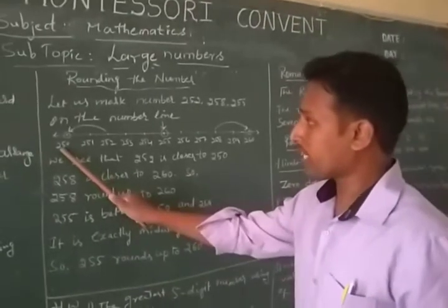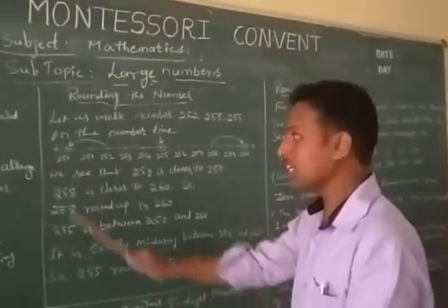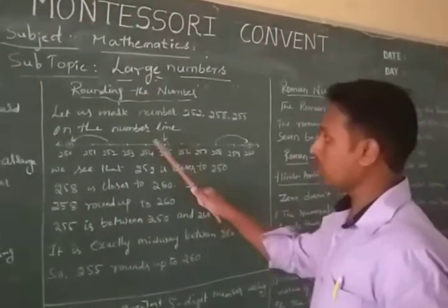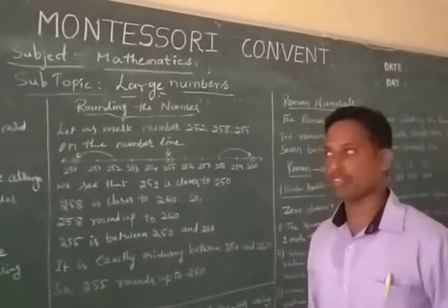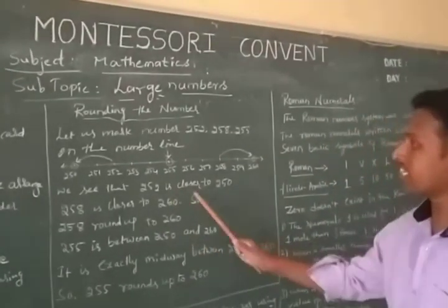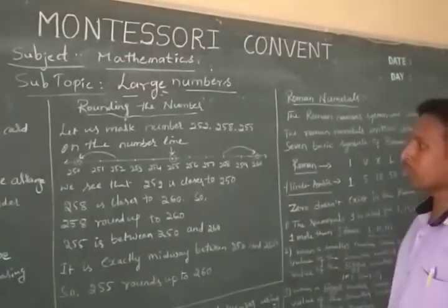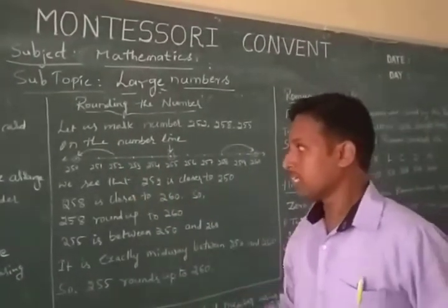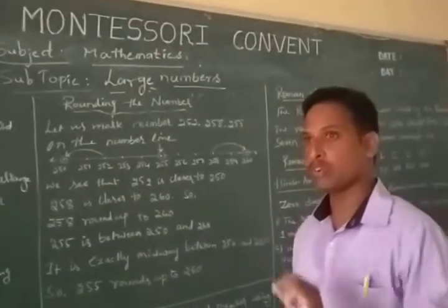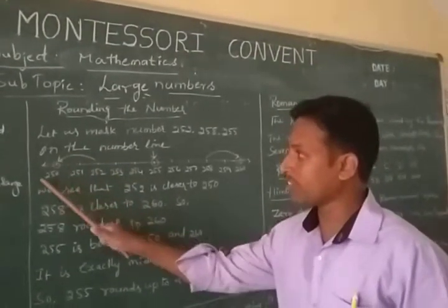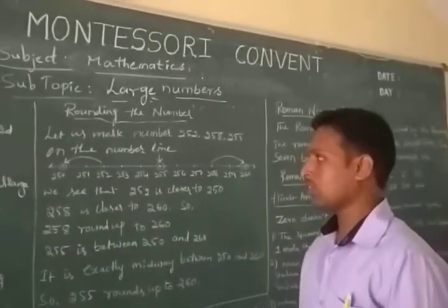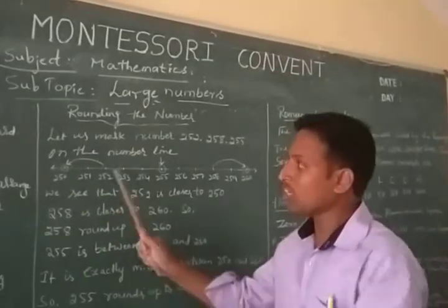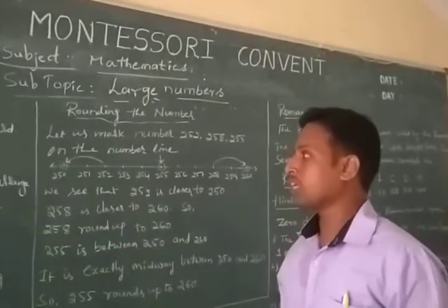Here, 250 is the starting number on the line and 260 is the last number on the line. The midpoint number is 255. We see that 252 is closer to 250, because 252's nearest value is 250.